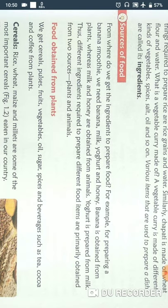Let's discuss from where we get the ingredients to prepare food. For example, for preparing a banana smoothie we need banana, milk, and yogurt. Banana is obtained from plants, whereas milk and honey are obtained from animals, and yogurt is prepared from milk. The ingredients required to prepare different food items are primarily obtained from two sources: either from plants or from animals.